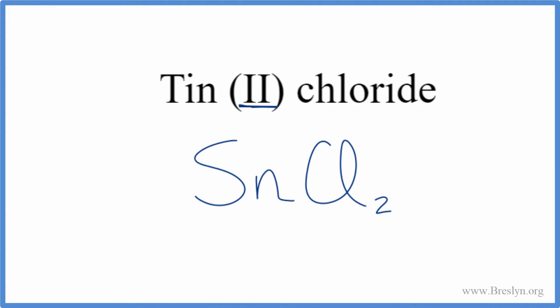Let's check our work though. Tin, we said, had a two plus charge, and the chlorine was one minus. So we have two chlorine atoms, each one's one minus, so that's two times one minus, that's a two minus. One tin, which is two plus, so we have two plus there. Two plus and two minus, they cancel out, so the net charge is zero.